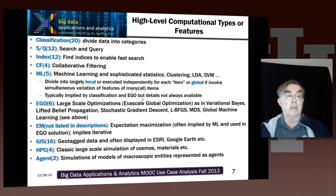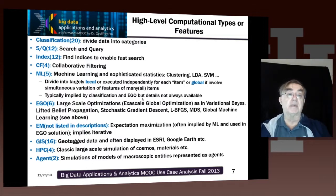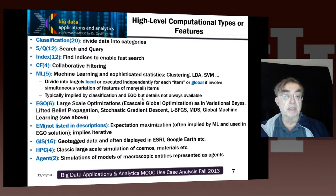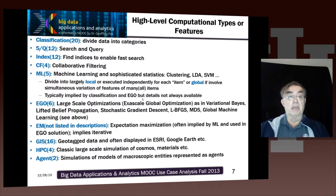At the higher level, we introduced the following types of characterization. Not surprisingly, a lot of applications involve classifying or characterizing data — dividing into clusters, dividing news into topics, telling e-commerce users what they ought to be looking at, classifying items into interesting and uninteresting. That's 20 out of the 51. A lot also involves search and query: you have a big diverse dataset and need to search it according to special user queries. That is often enhanced by finding indices, because indices are essentially a way of speeding up search.